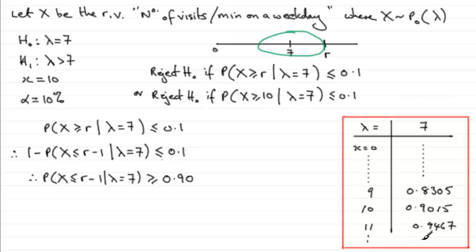And it carries on after that. So the value that we're interested in is this value of 10, because it's the first value that exceeds 0.90, with this probability.